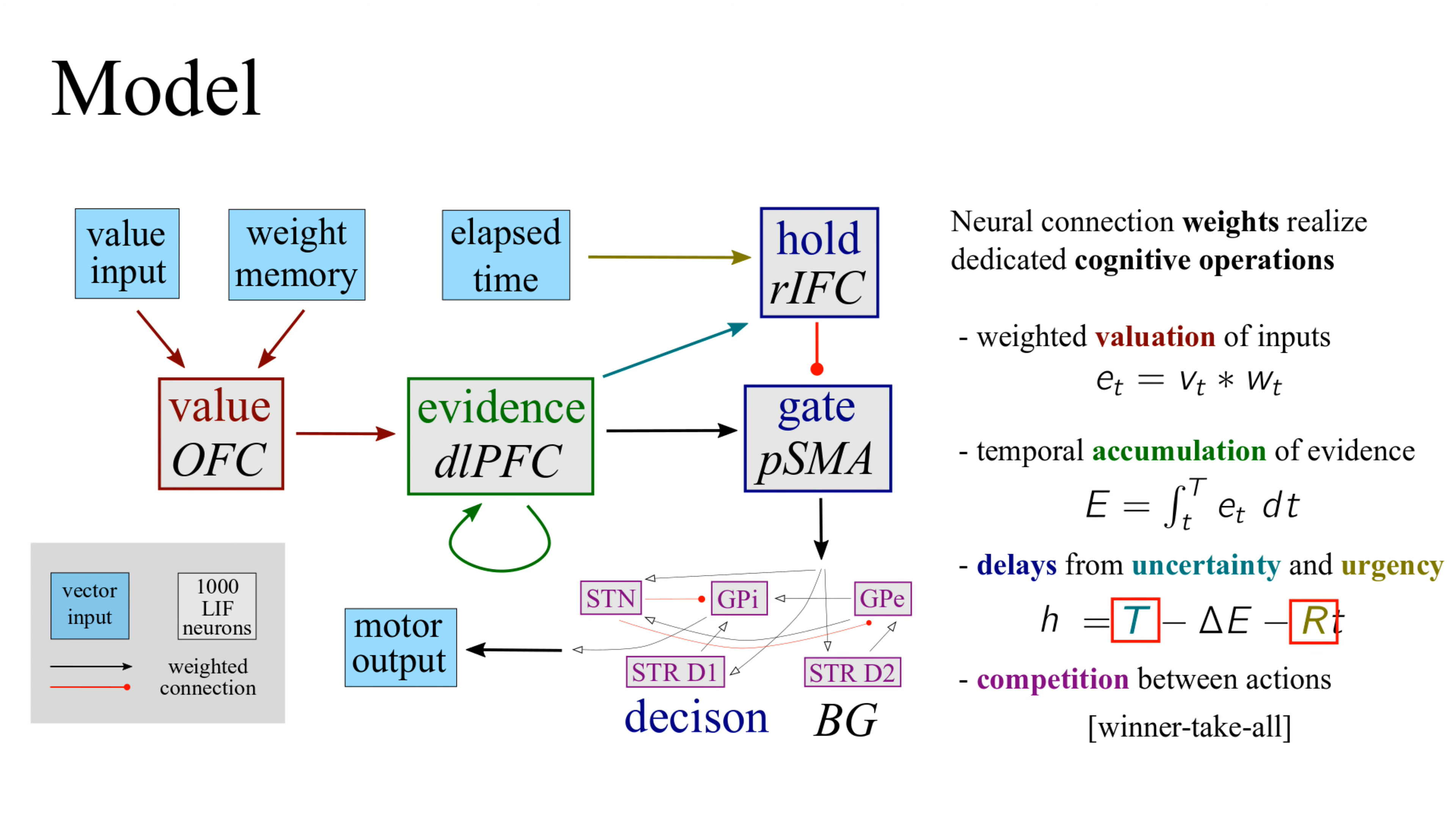The model has two free parameters. The decision threshold, T, determines how much evidence is required before a decision, and the urgency parameter, R, determines how quickly the dynamic threshold shrinks. We use the neural engineering framework to instantiate these functions in neural connection weights.